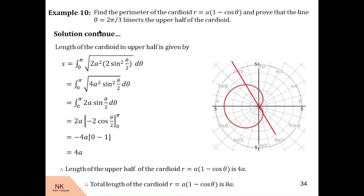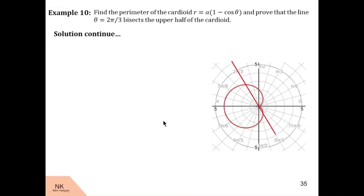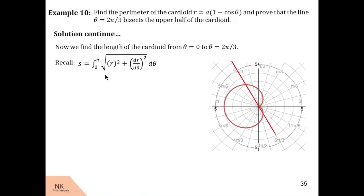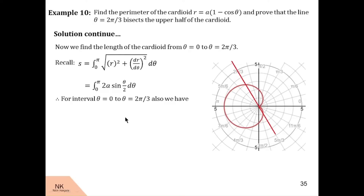Now let us prove that the line theta is equal to 2 pi by 3 bisects the upper half of the cardioid. That means we have to prove that length of the cardioid from theta equal to 0 to theta equal to 2 pi by 3 is 2a, because length of the cardioid in the upper half is 4a. Now we have already simplified the integral and the integrand after simplification is 2a sin theta by 2 d theta. Since we have to find length from theta equal to 0 to theta equal to 2 pi by 3, these limits will change to 0 to 2 pi by 3.